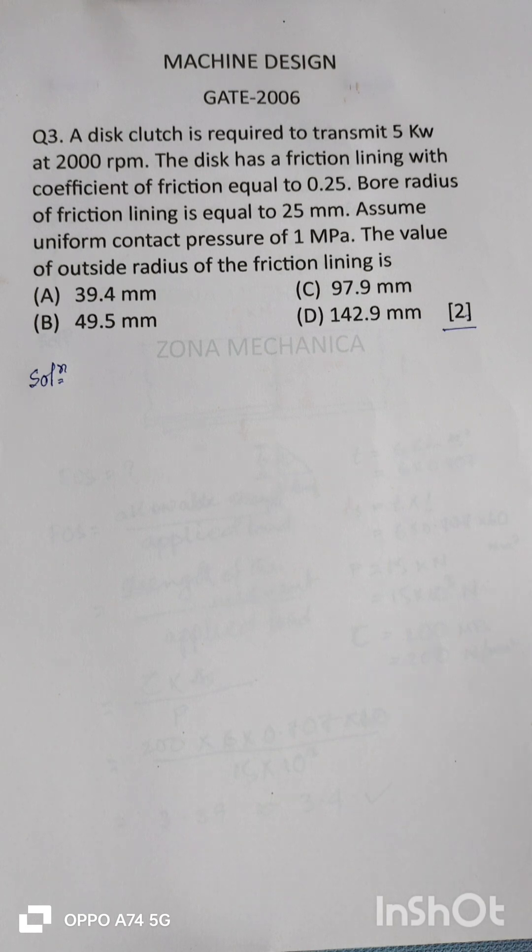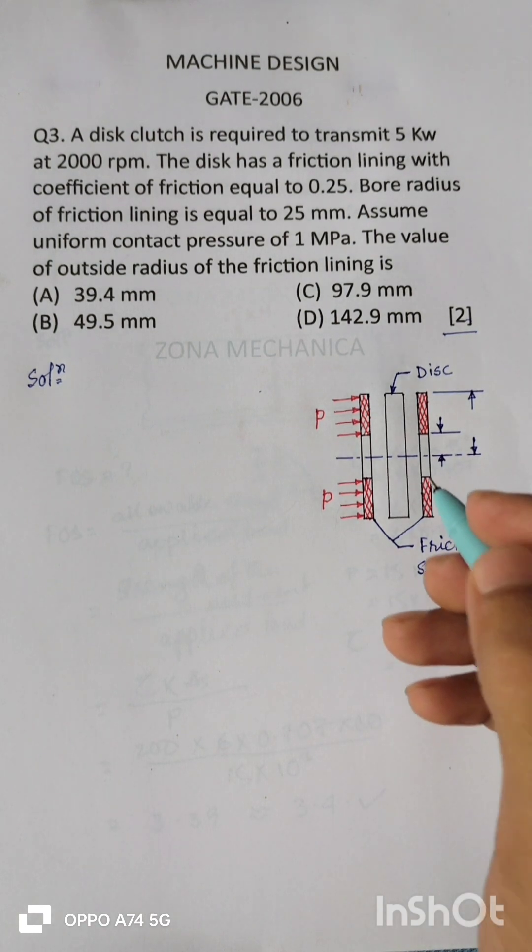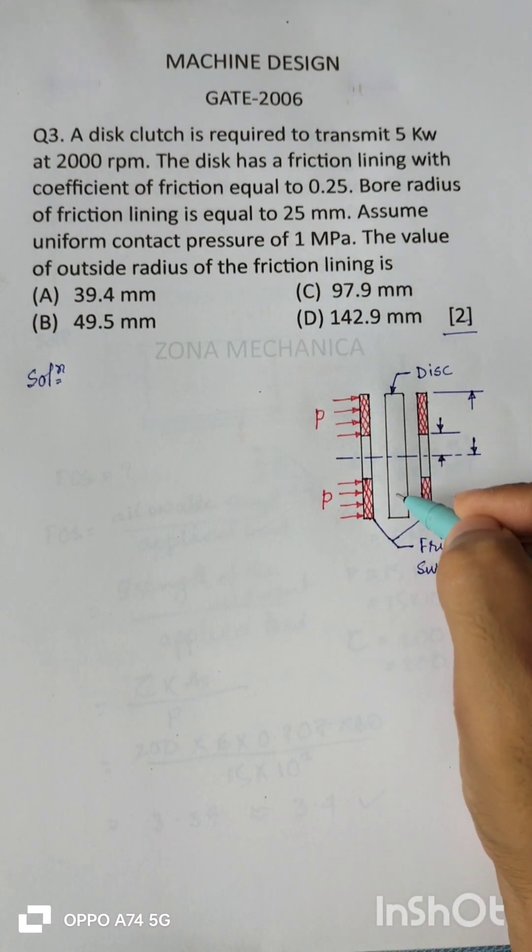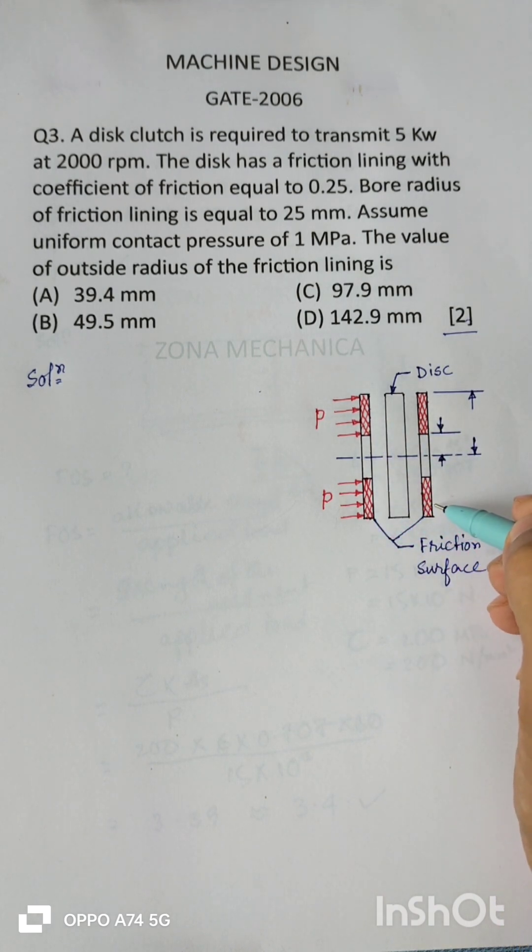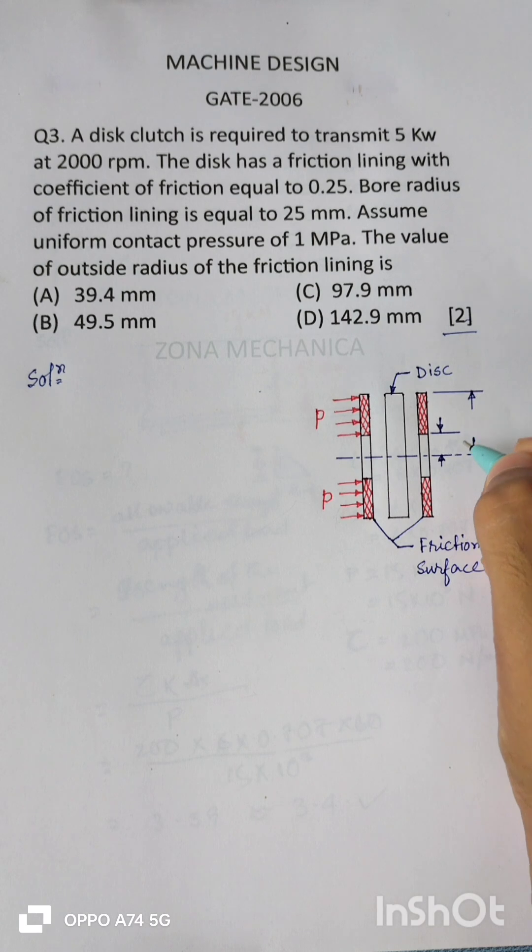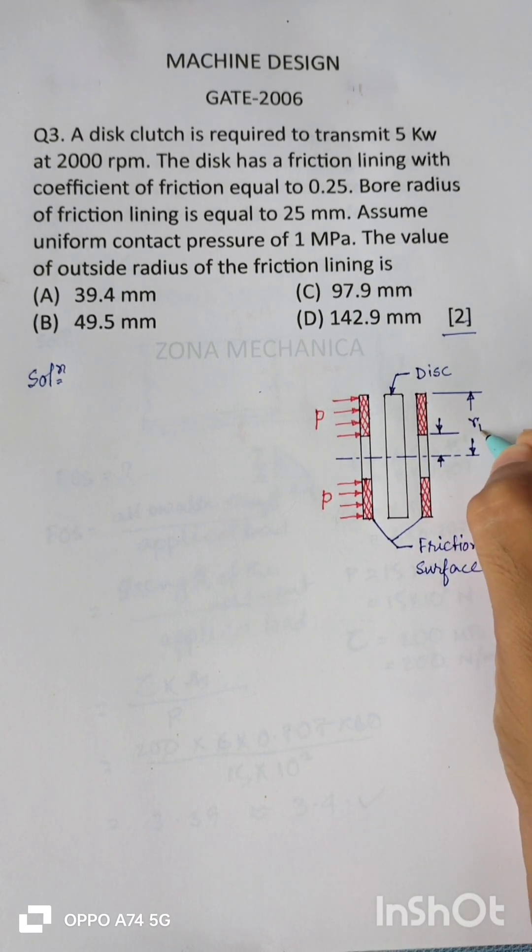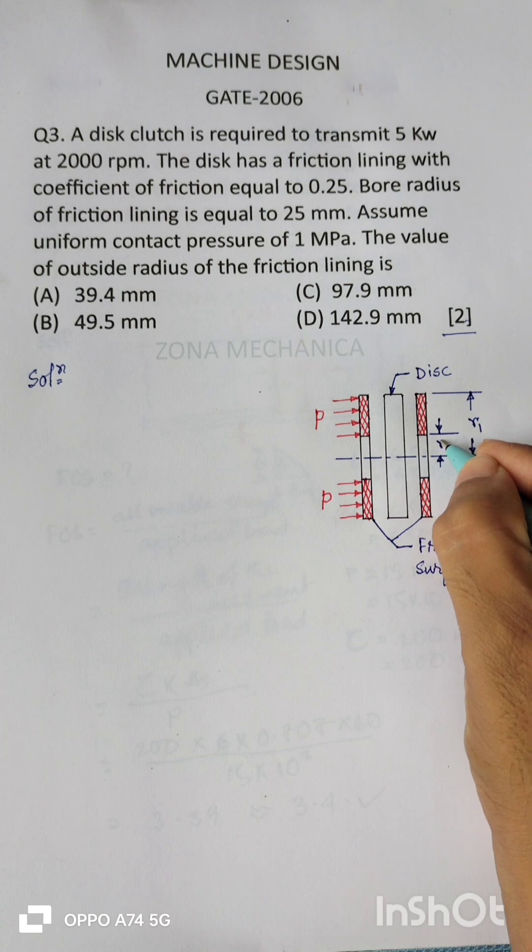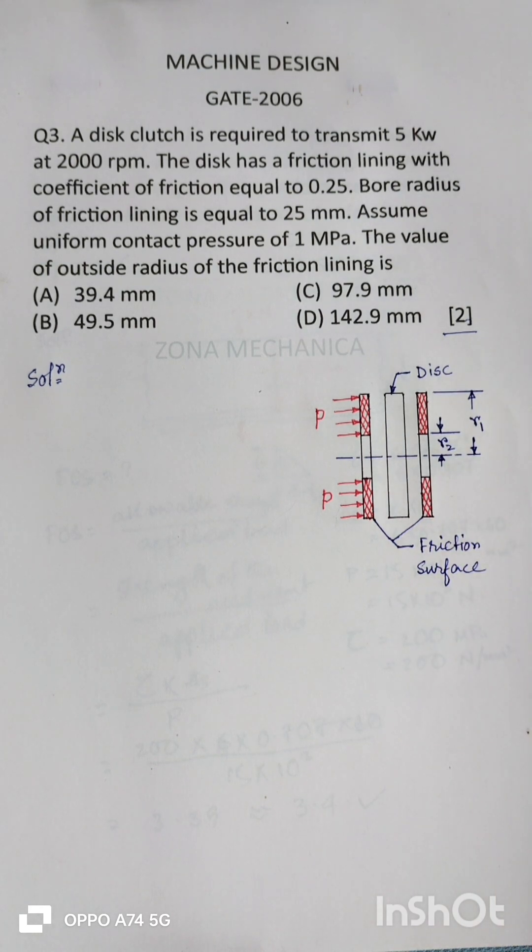Let me draw the figure schematically. Let this be the disc, and these two are the friction surfaces or friction liners, and this is the frictional contact area. Let the outer radius of the friction liners be R1 and inner radius or bore radius be R2.